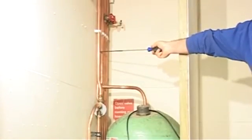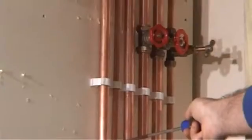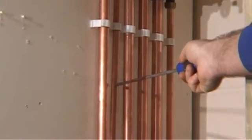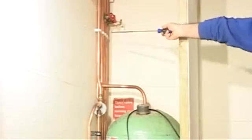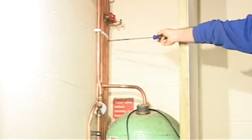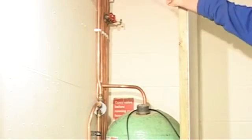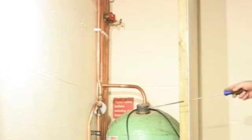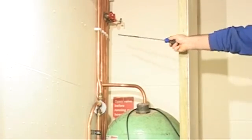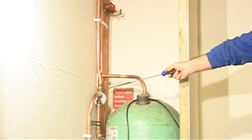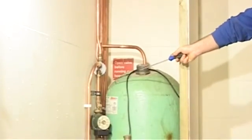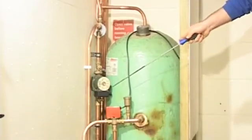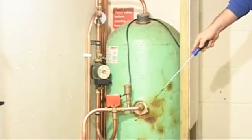This small pipe is the feed and expansion pipe, which comes from the feed and expansion tank. There are no valves on this pipe at all. It must lead straight down from the tank, through the system, filling up the coil, the radiators and the boiler.